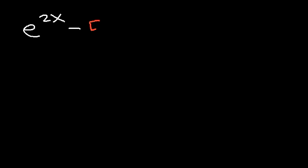In this video, we're going to focus on solving exponential equations in quadratic form. Let's say we have this equation: e to the 2x minus 5 times e to the x plus 6, equals 0. What would you do in order to solve for x? Feel free to pause the video and work on this example.